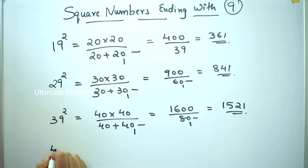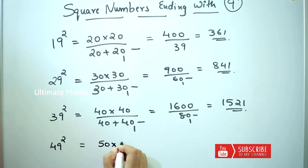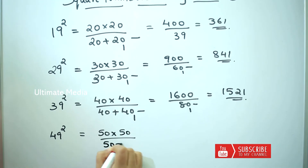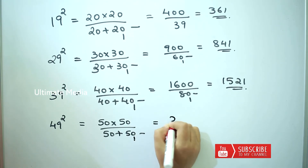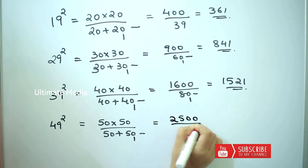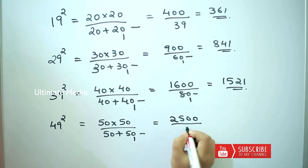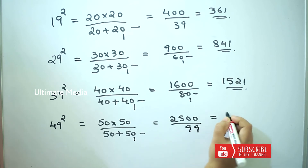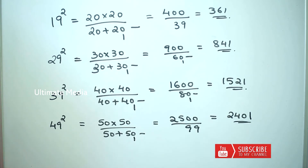Next, 49 square. 50 into 50, by 50 plus 50, minus 1. 2500 by 100 minus 1 = 99. The answer is 2401. So 49 square is 2401.